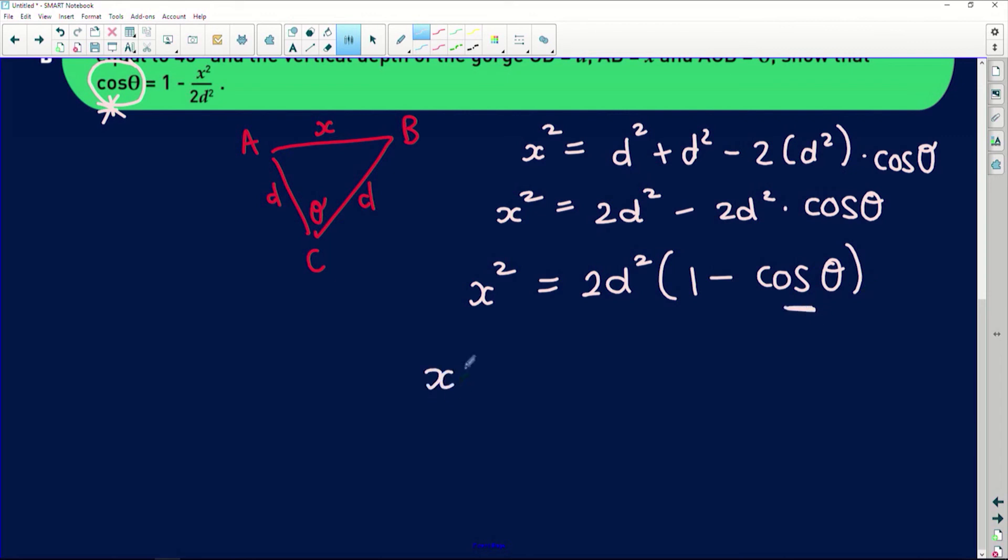If we take out a common factor of 2d squared, we get 1 minus cos of theta. So x squared divided by 2d squared is equal to 1 minus cos of theta. To get cos of theta on its own, it's equal to 1 minus x squared all over 2d squared, and that is exactly what we're trying to prove.